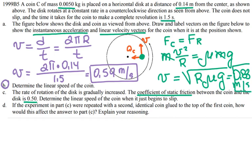For part D: If the experiment in part C were repeated with a second identical coin glued to the top of the first coin, how would this affect the answer to part C? Explain your response.